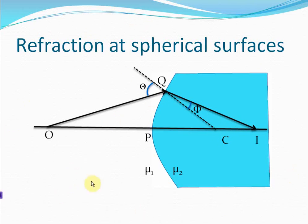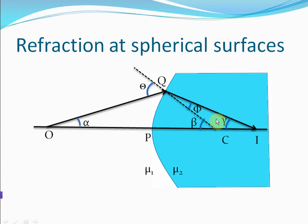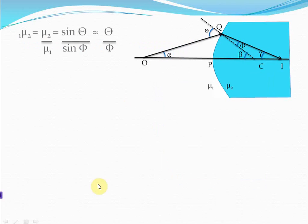What will be the equation of refraction here in terms of mu1, mu2, and the image distance and the object distance? By Snell's law, 1-mu2 — the refractive index of this glass with respect to air — is equal to sin theta divided by sin phi, where theta is the angle of incidence and phi is the angle of refraction.